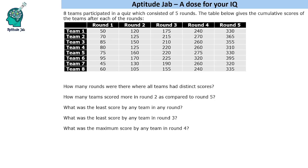Hello everyone, welcome to Aptitude Jab. This is an easy set. In this we are given a data table which says that 8 teams participated in a quiz which had 5 rounds, and the table below gives the cumulative scores of the teams after each of the rounds. Cumulative scores means total scores.